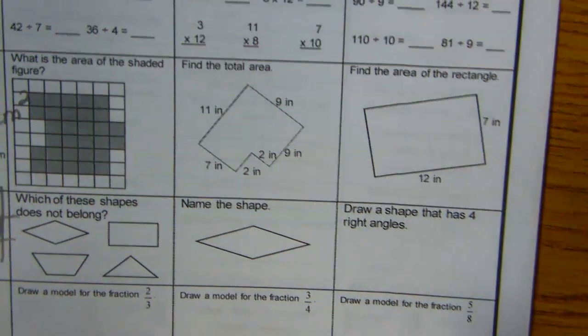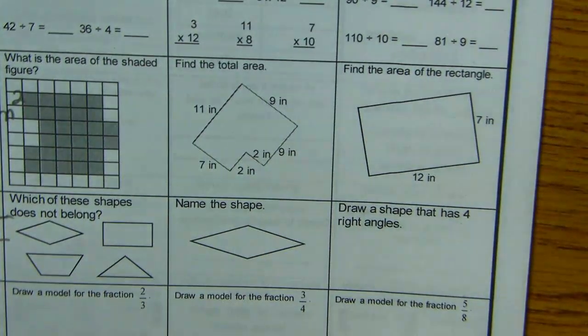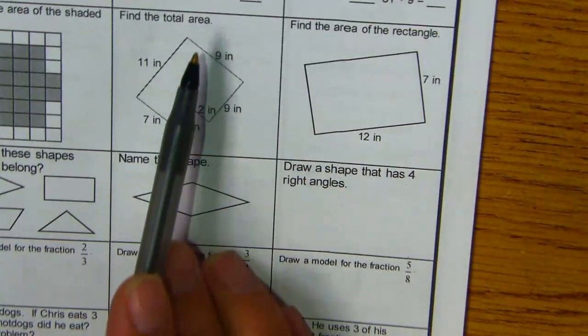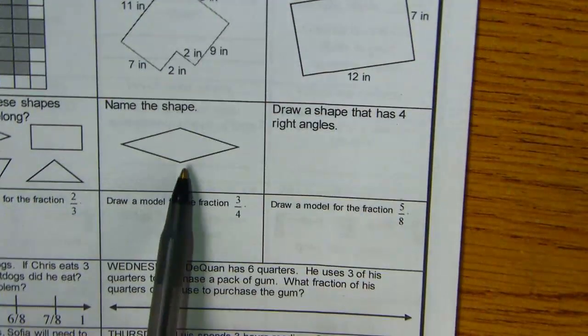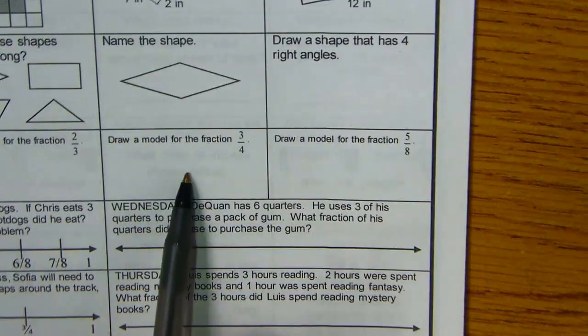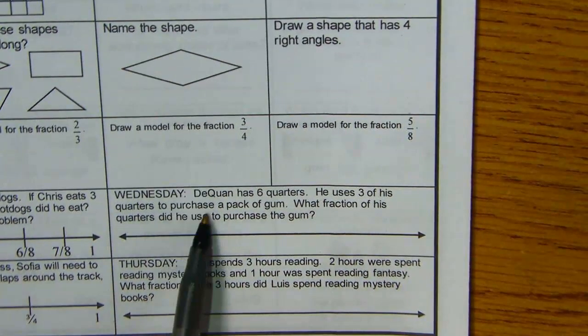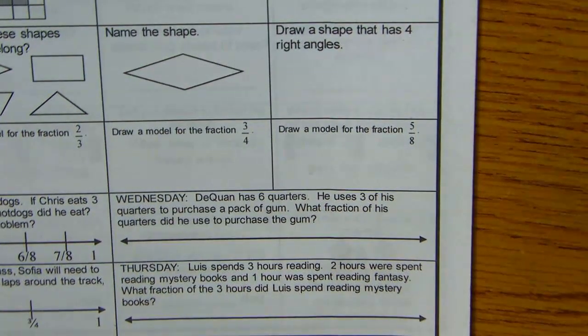All right, welcome YouTube peeps. We are on Q34, and we are looking at Wednesday's homework. We're going to be doing the area, naming the shape, making a model of three-fourths, and we'll do a couple of the word problems.